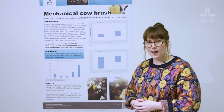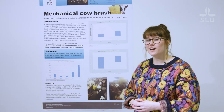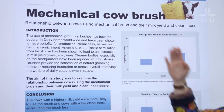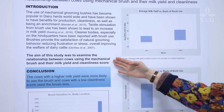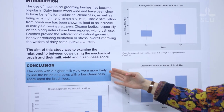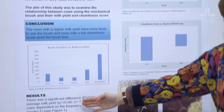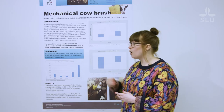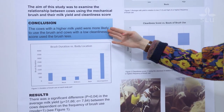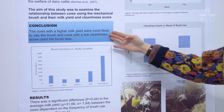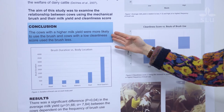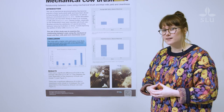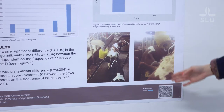Here, the students have chosen to structure their poster via the introduction, their aim, their conclusion, and then their results. We can also see that they have used color to highlight their conclusion, showing the audience that this is the most important part of their poster. These students have also chosen to put their references in a QR code at the bottom of the poster.